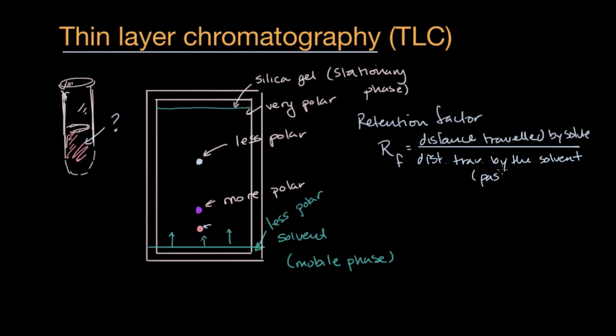It's the distance traveled by the solvent from this origin, from where we applied this dot right over here, so past the origin. Let me label that as the origin. So what would it be in this situation? To help us there, we would have to get out a ruler. The retention factor for substance A right over here, so I'll put that dot there, label that A.